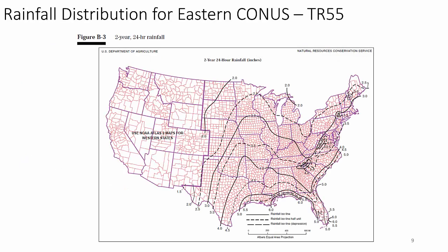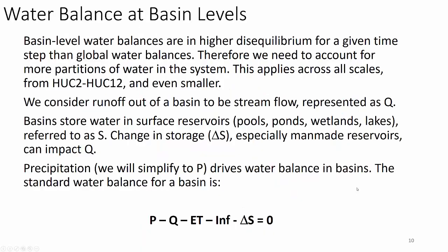Rainfall is not uniformly distributed across the United States. Here we're looking at the TR-55 rainfall charts, which you'll become very familiar with next week as we talk about precipitation. These charts show the impact of mountain ranges — you should be able to tell me what kind of storm events those mountain ranges cause. As rainfall moves from the Gulf of Mexico up and out to the Atlantic, it causes significant precipitation through the eastern seaboard mountains, from the Alleghenies all the way down through the Appalachians.